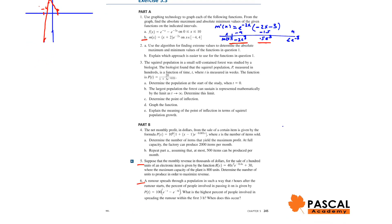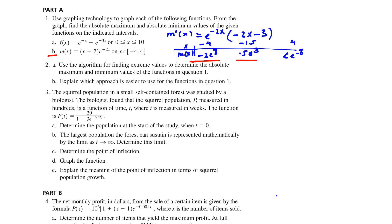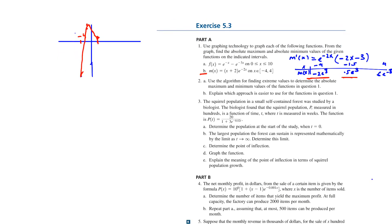We are working on questions on page 245 of the textbook. The first question is question number one, part B. We are looking for the maximum and minimum of m(x) = (x+2)e^(-2x) on the closed interval [-4, 4]. The textbook asks us to use a graphing calculator to find the maximum and minimum. If we use a graphing calculator, the graph of the given function when x is between -4 and 4 looks something like the graph we have here.